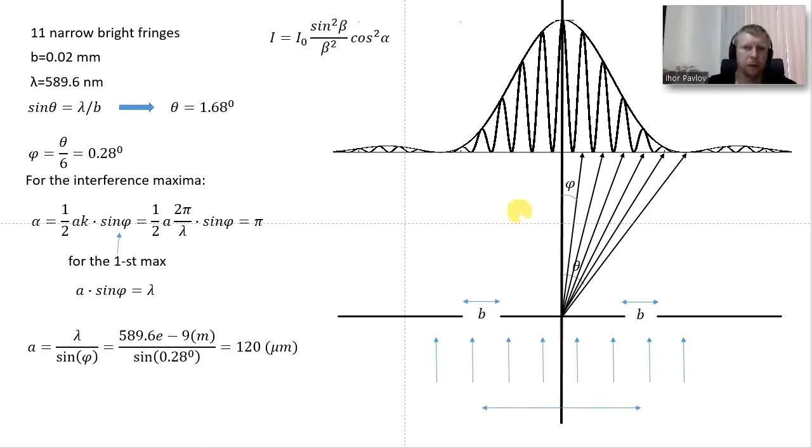For the first maximum we have this angular distance, the angle phi, and that corresponds to pi phase shift. So alpha equals pi here, and that corresponds to a times sine phi equals lambda, which allows us to calculate a as 120 microns.